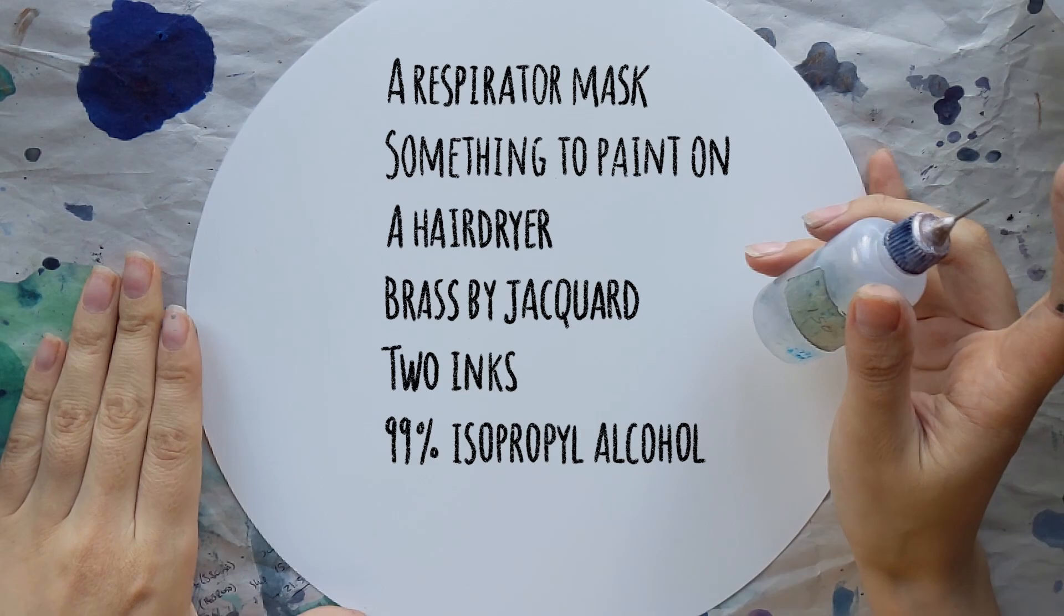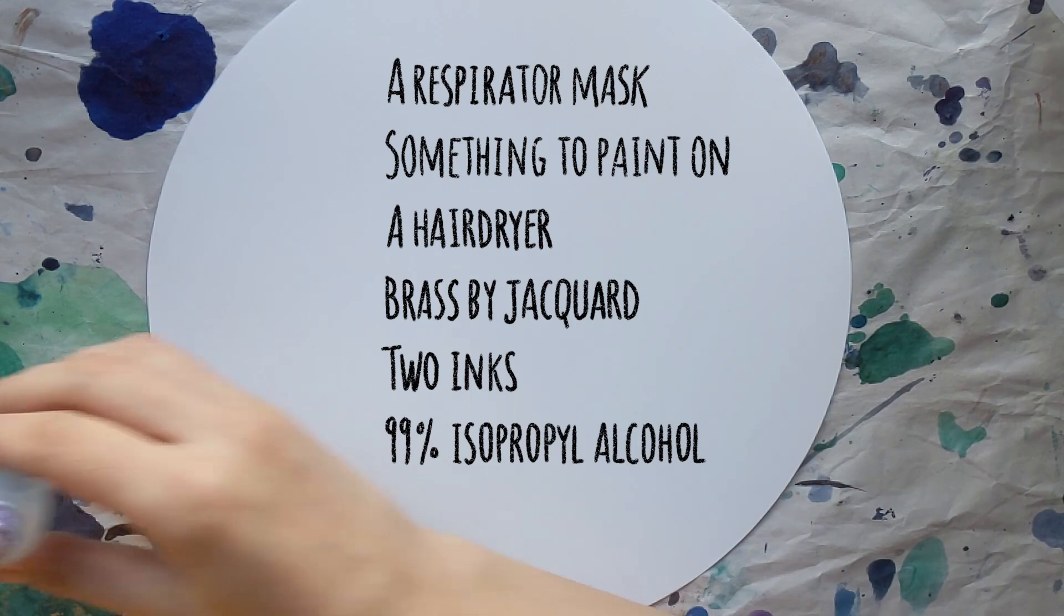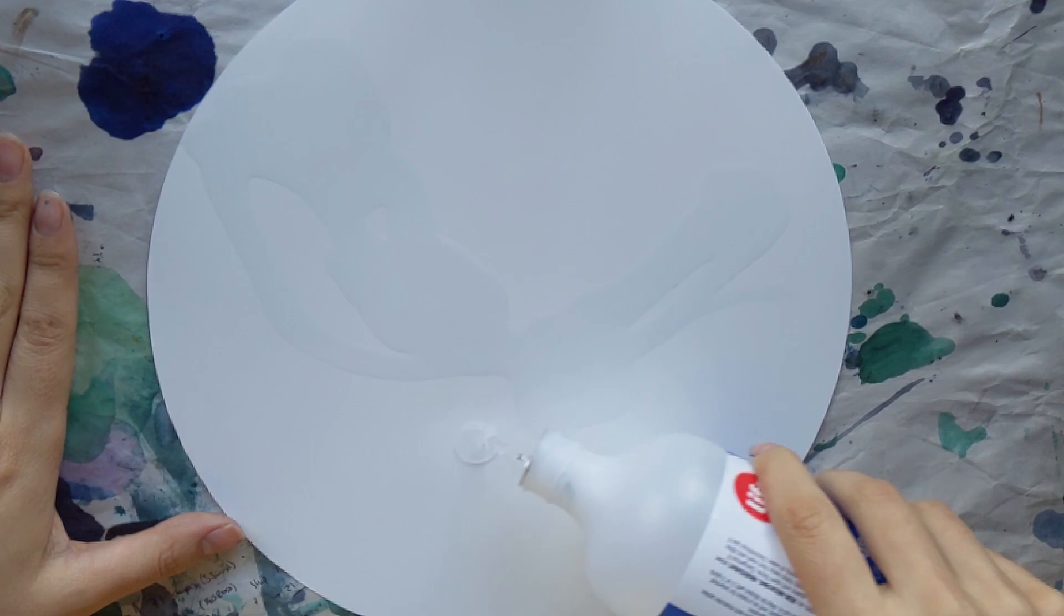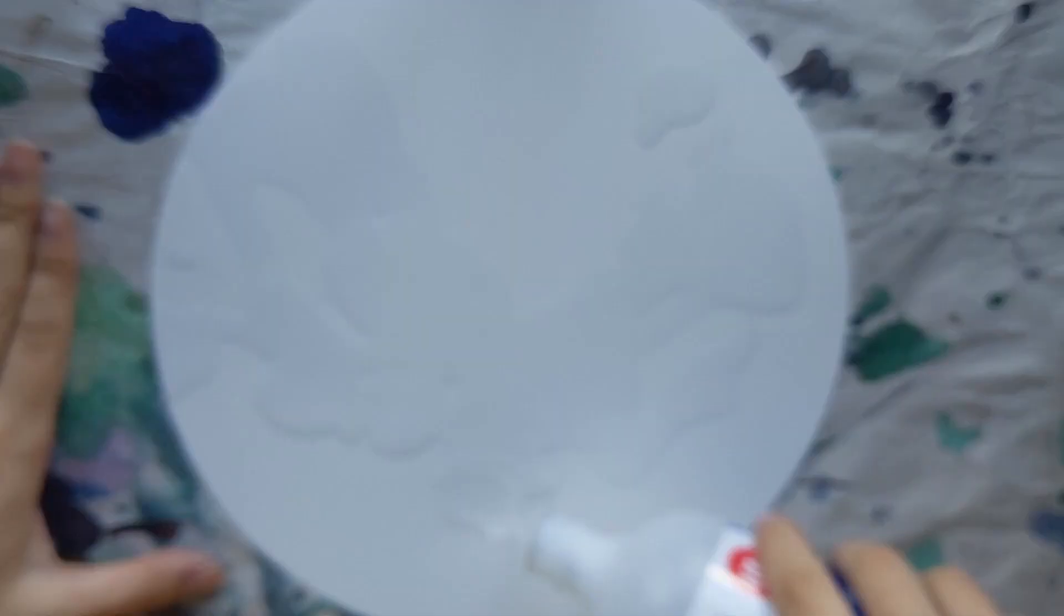You'll also need 99% isopropyl alcohol which I have in this needle tip bottle. I find it really helpful when I'm painting because it gives you a bit more precision. And then I'm also going to be using that squeeze bottle that I just showed briefly there to push the inks around. It's like the ink blower by Ranger but I just had it in the house and it works perfectly.